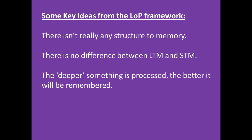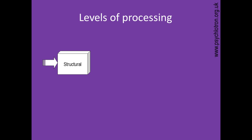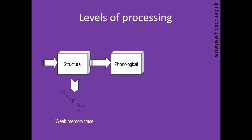Their idea is often criticized for being a description rather than an explanation. So this is the Levels of Processing framework in a nutshell. At the bottom, you've got structural processing — this is all about how something looks. If it's to do with words, you could be asking if it's written in capital letters or if it's black or white. This leaves only a very weak memory trace. Then you've got an intermediate level of processing, which could be phonological — this is how things sound. You could be asking: does the word rhyme? For example, rat, cat, and hat all rhyme.